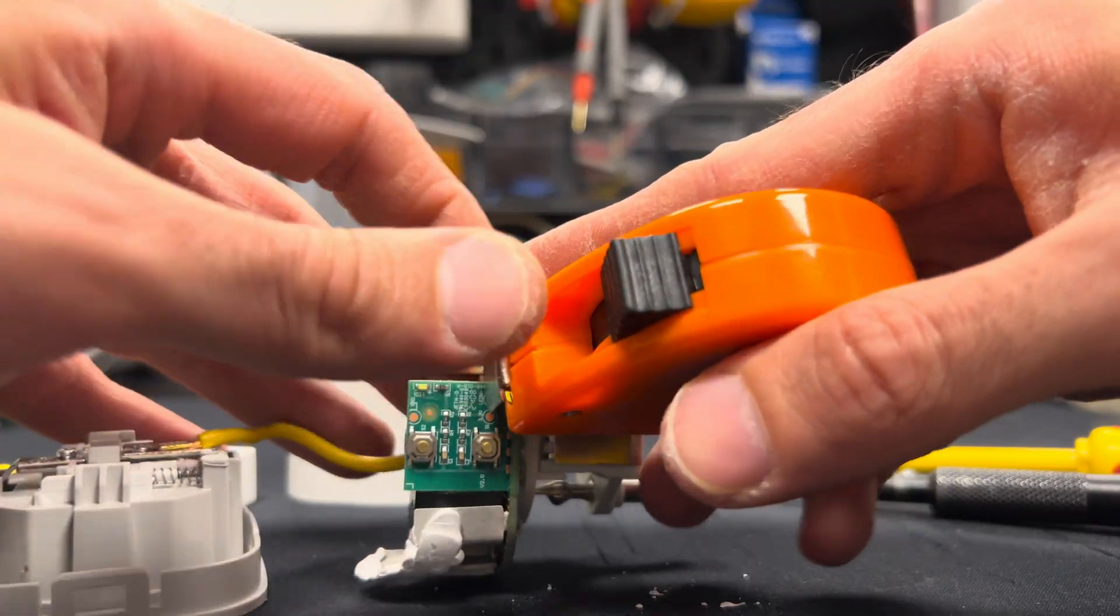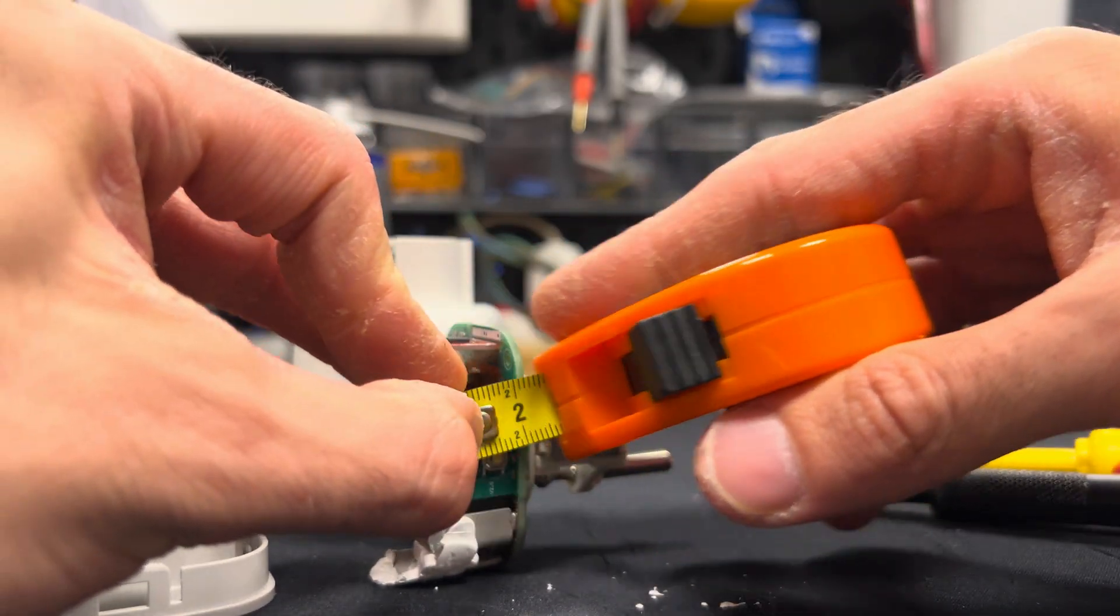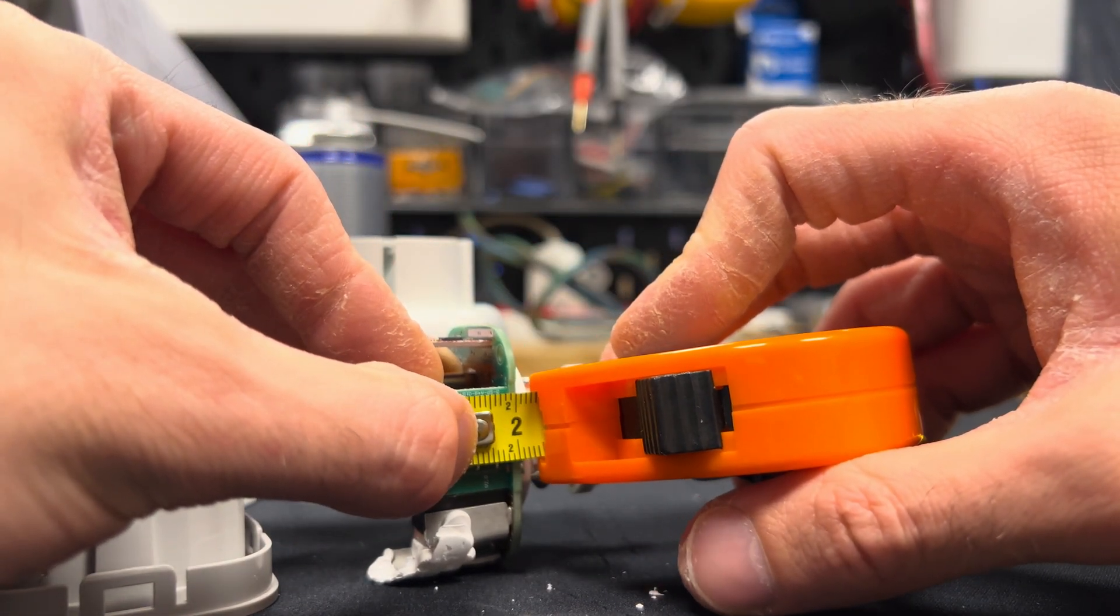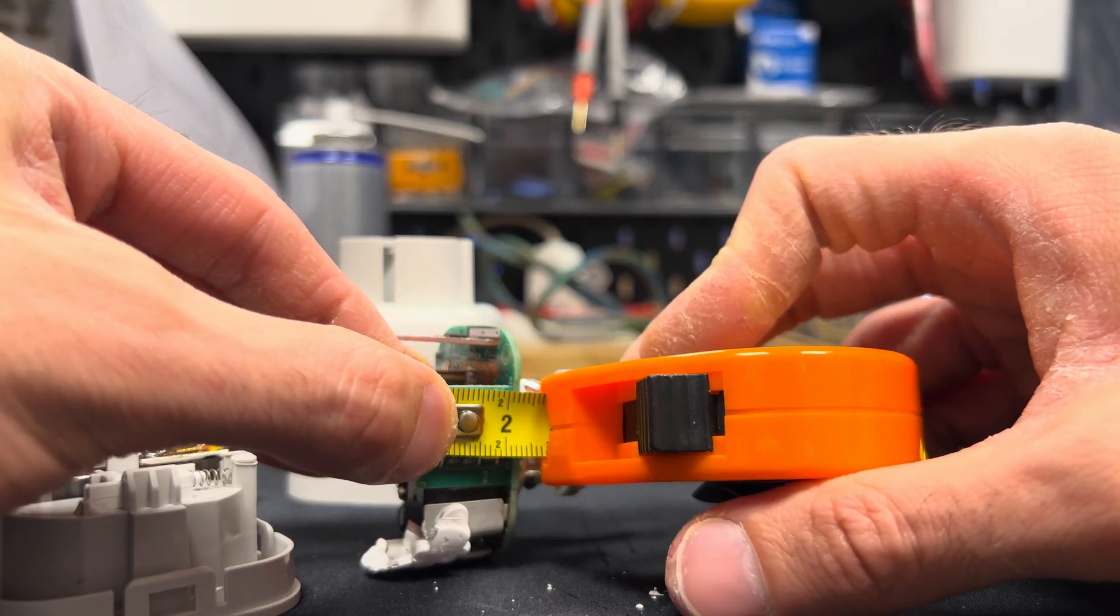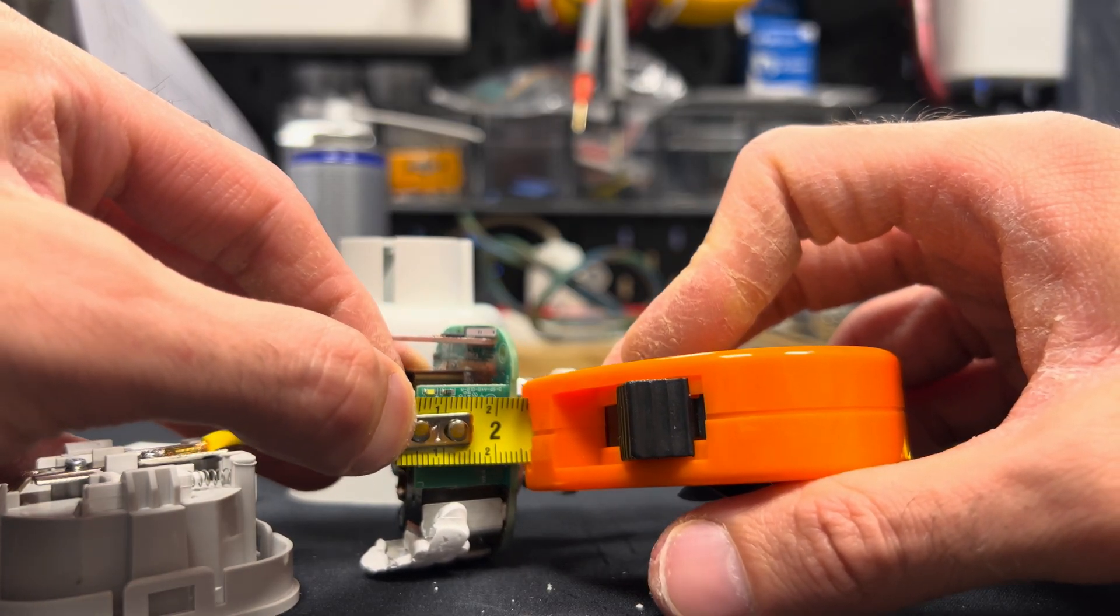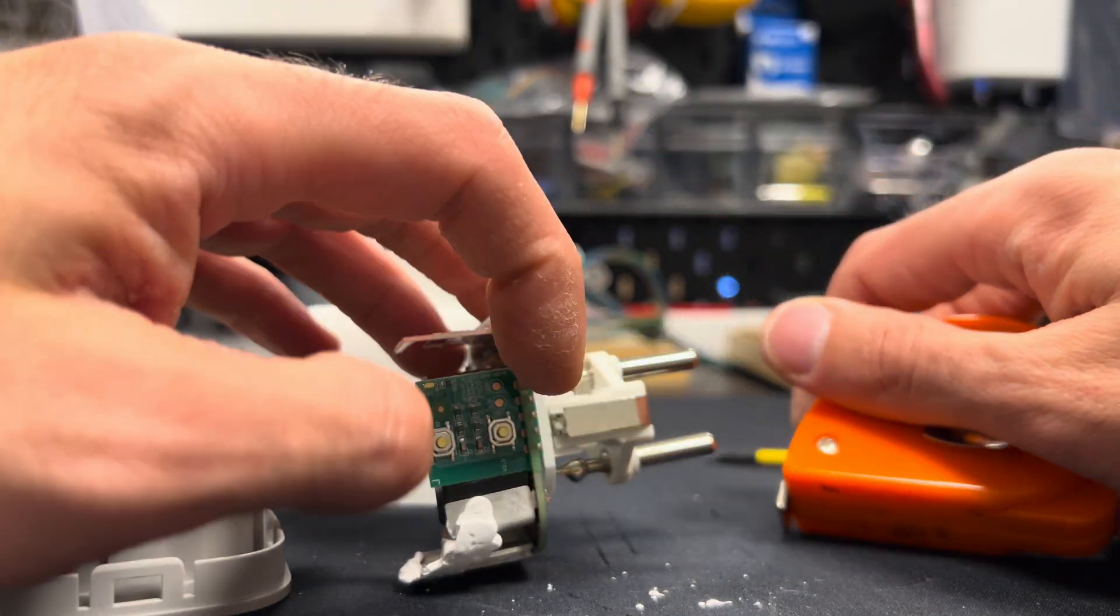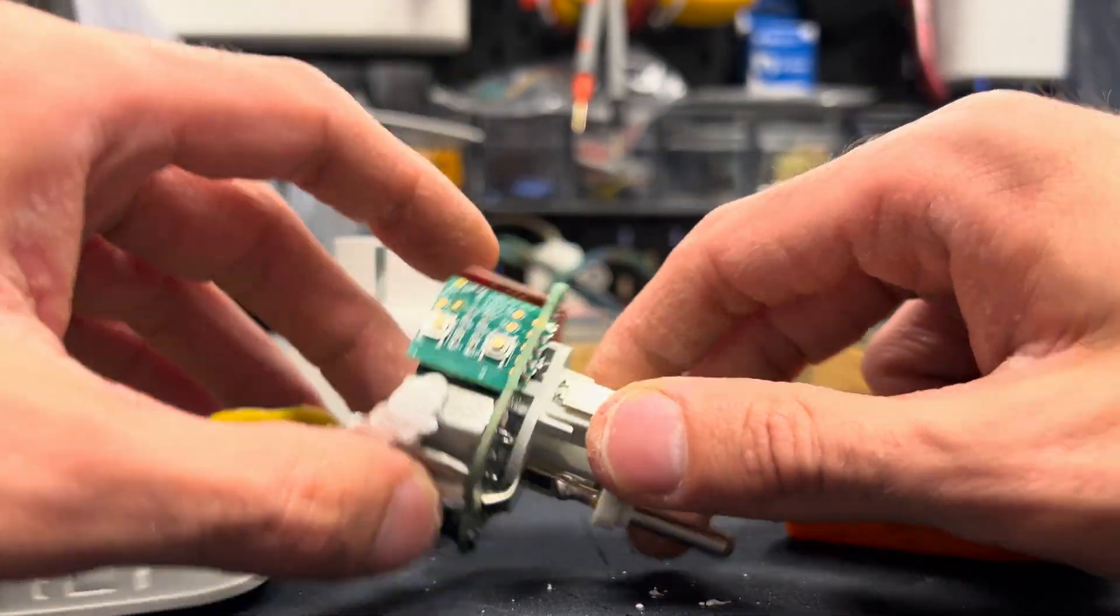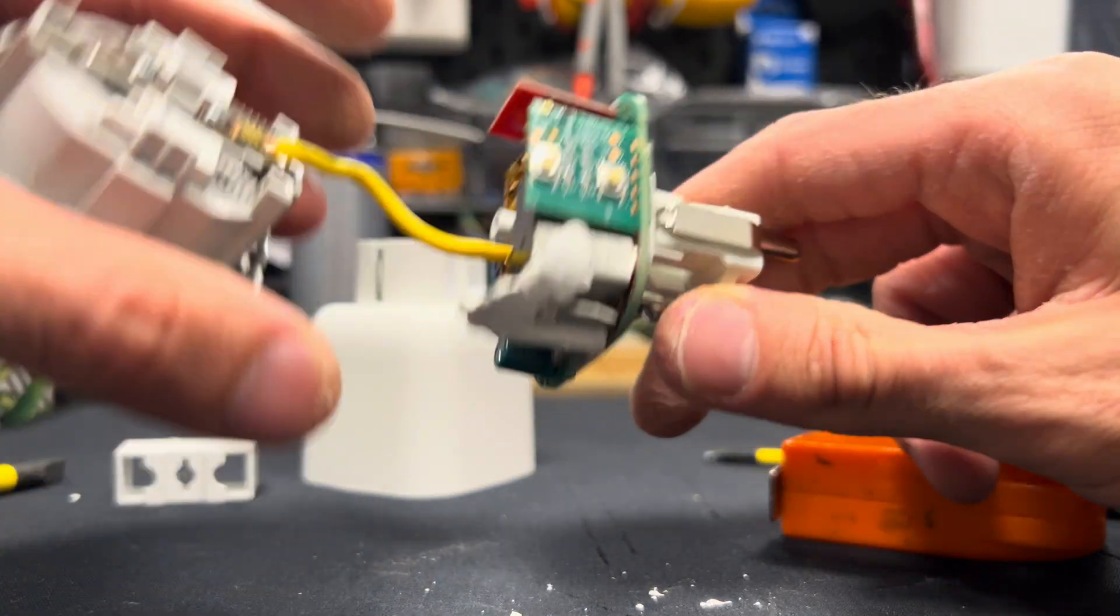So ideally, this would be a little bit more, like you would say like two and a half centimeters. So that's about the thickness, the height of the PCB.